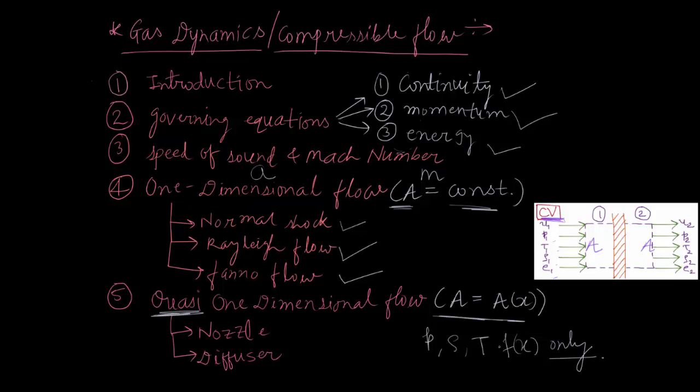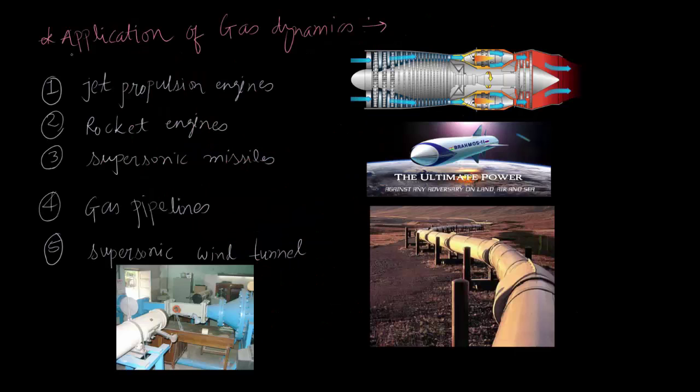They are constant in y and z direction. Such type of flow occurs in nozzle and diffuser. Now let us talk about application of gas dynamics.